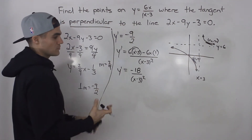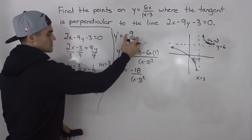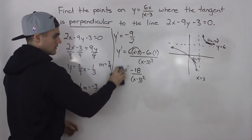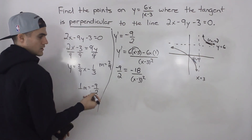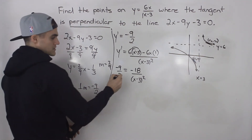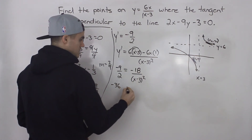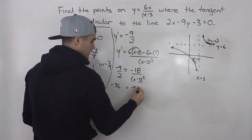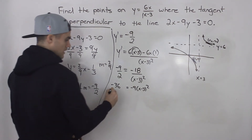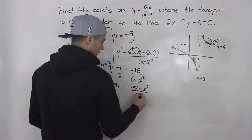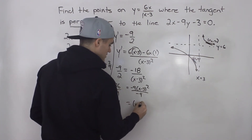This derivative gives the slope of the tangent at any x-value. We want it to equal negative 9 over 2. So we set negative 18 over x minus 3 squared equal to negative 9 over 2 and cross multiply: 2 times negative 18 gives negative 36, and negative 9 times x minus 3 squared. Dividing both sides by negative 9 gives us 4 equals x minus 3 squared.